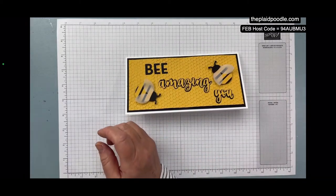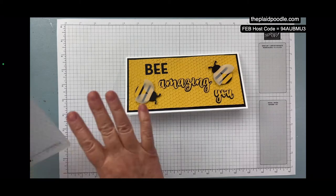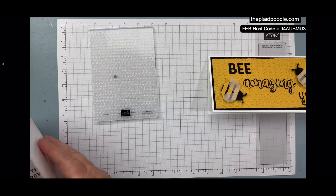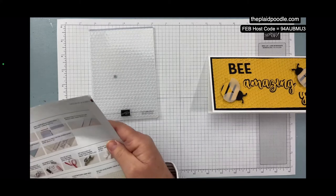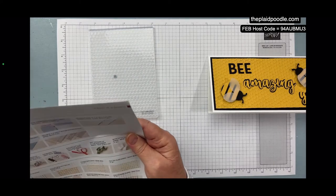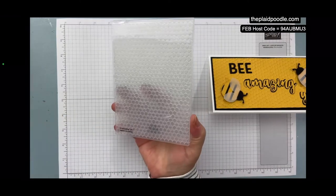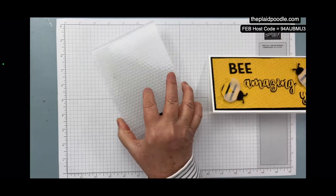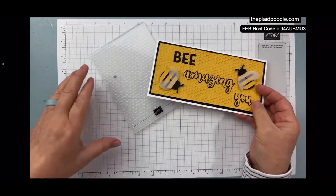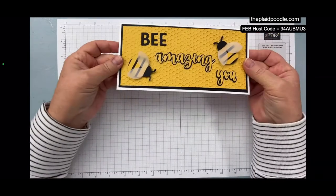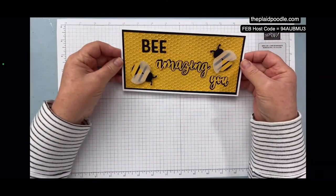And I used the new—let me get the name right—Hive 3D embossing folder. So you've got to use the hive embossing folder when you're making a card about bees. And it's also a slimline card.